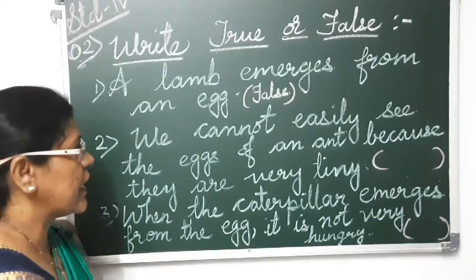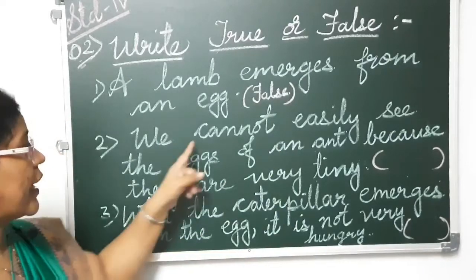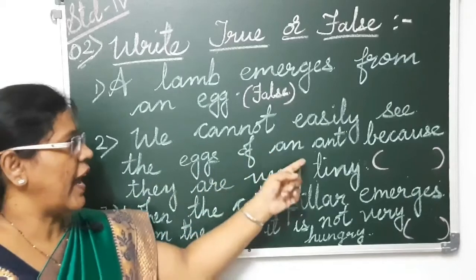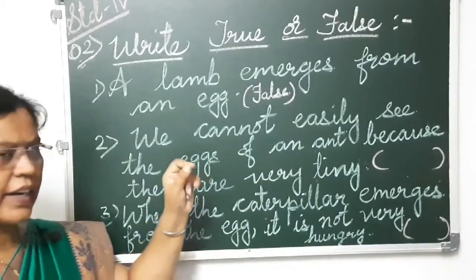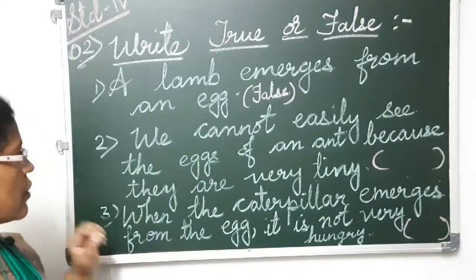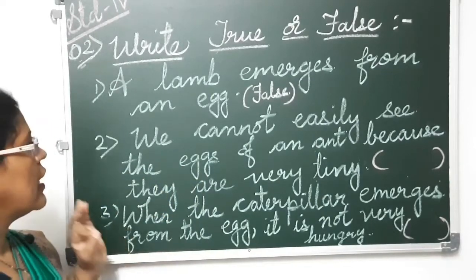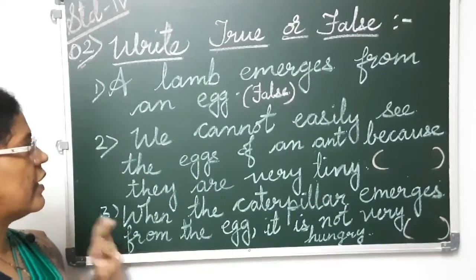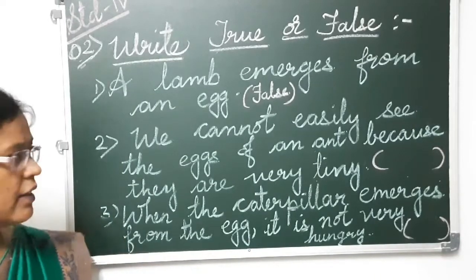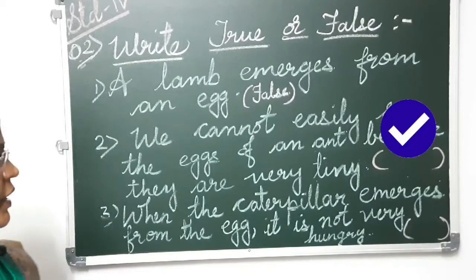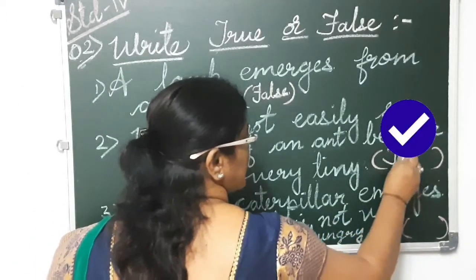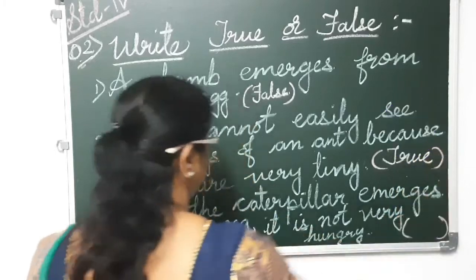The second one: we cannot easily see the eggs of an ant because they are very tiny. Tiny means very small. Is it true that we cannot see the eggs of an ant because they are very tiny? Yes, it is a true statement. T-R-U-E. True.